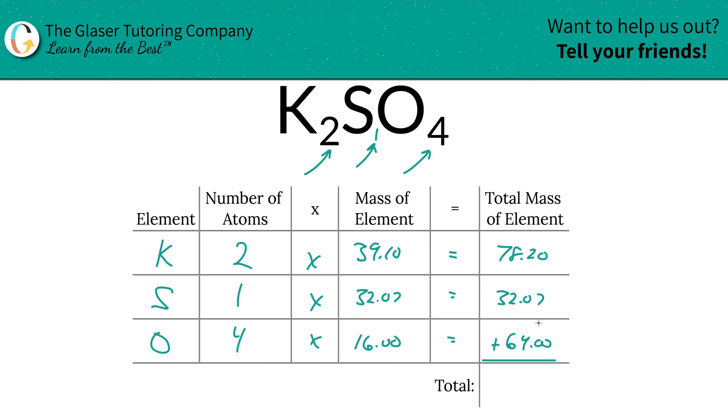Then to find the total mass of the entire compound, I think you know what to do from here, right? Just simply add up this column. And the total mass of potassium sulfate is going to be 174.27. And the units here are in terms of AMU, atomic mass unit, because we're finding molecular mass. That's all there is to it.